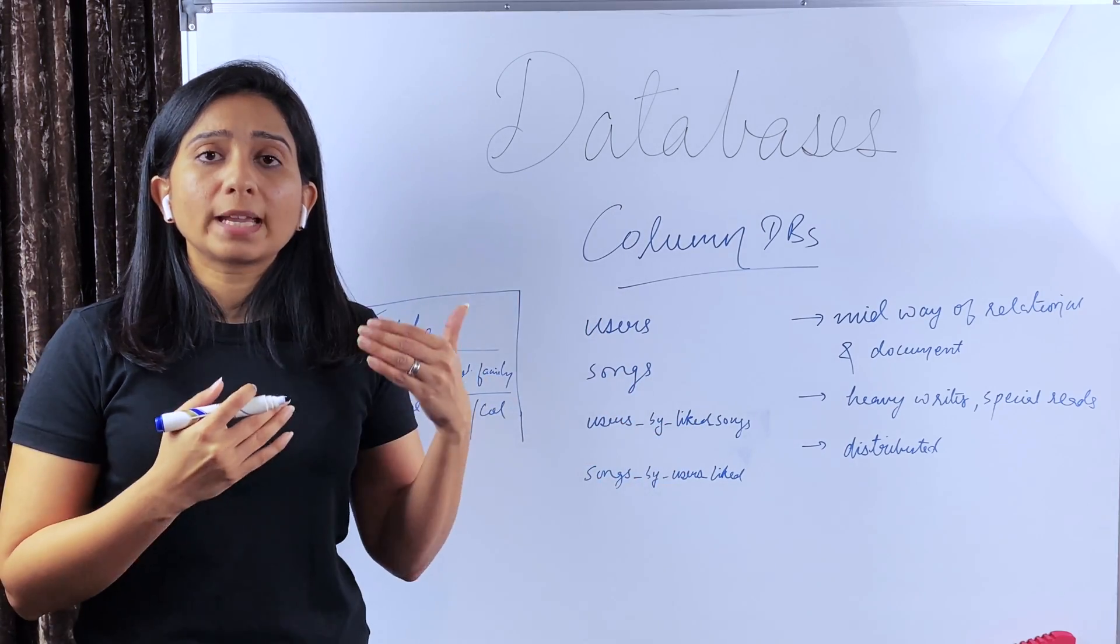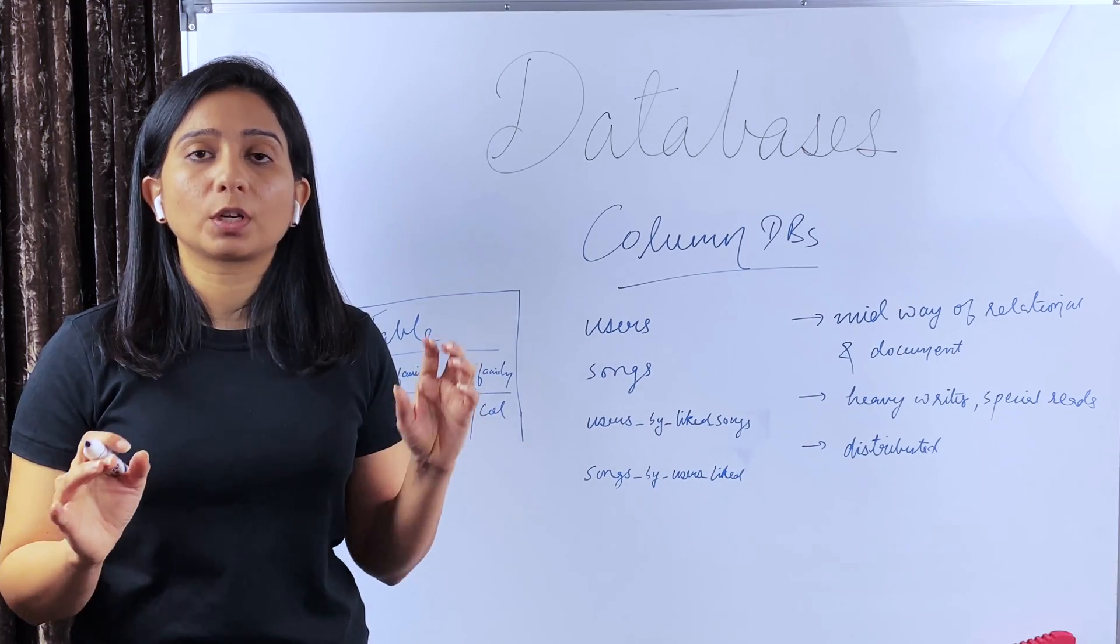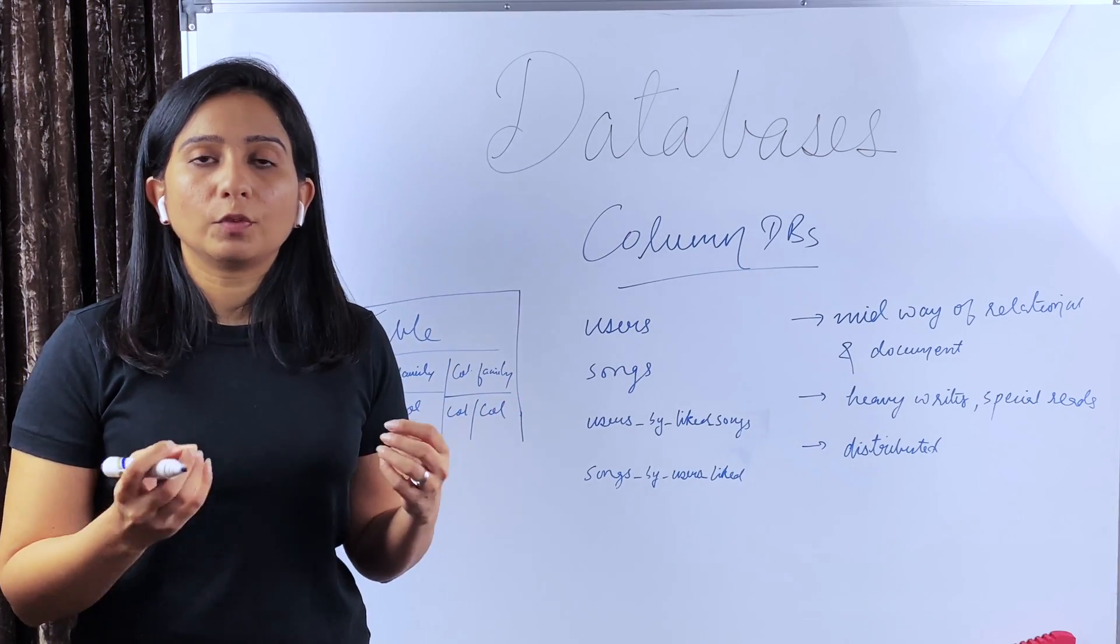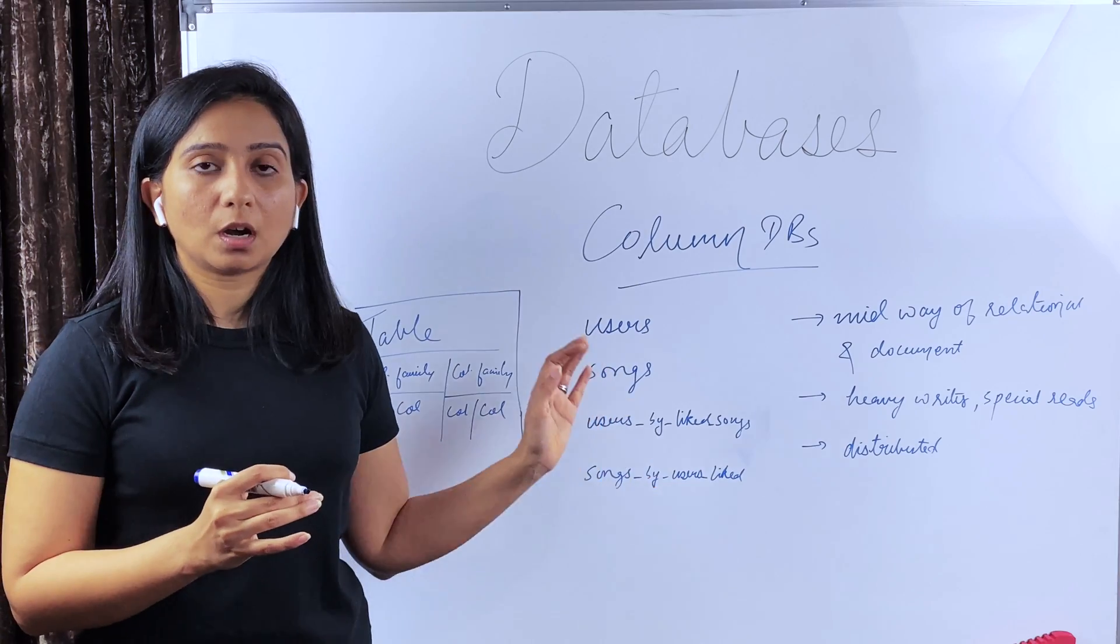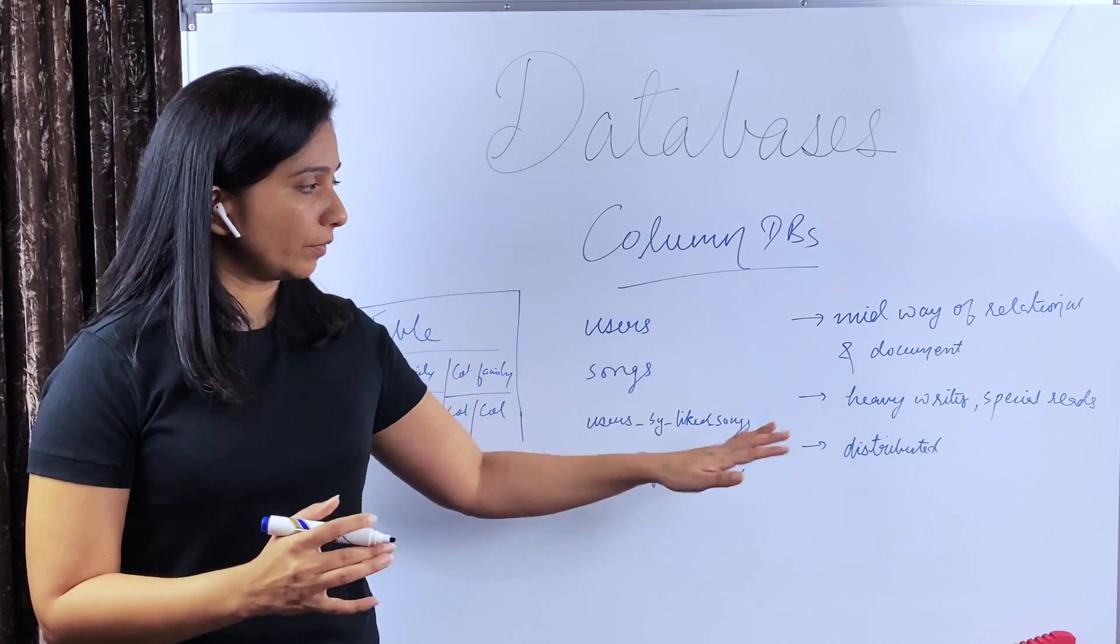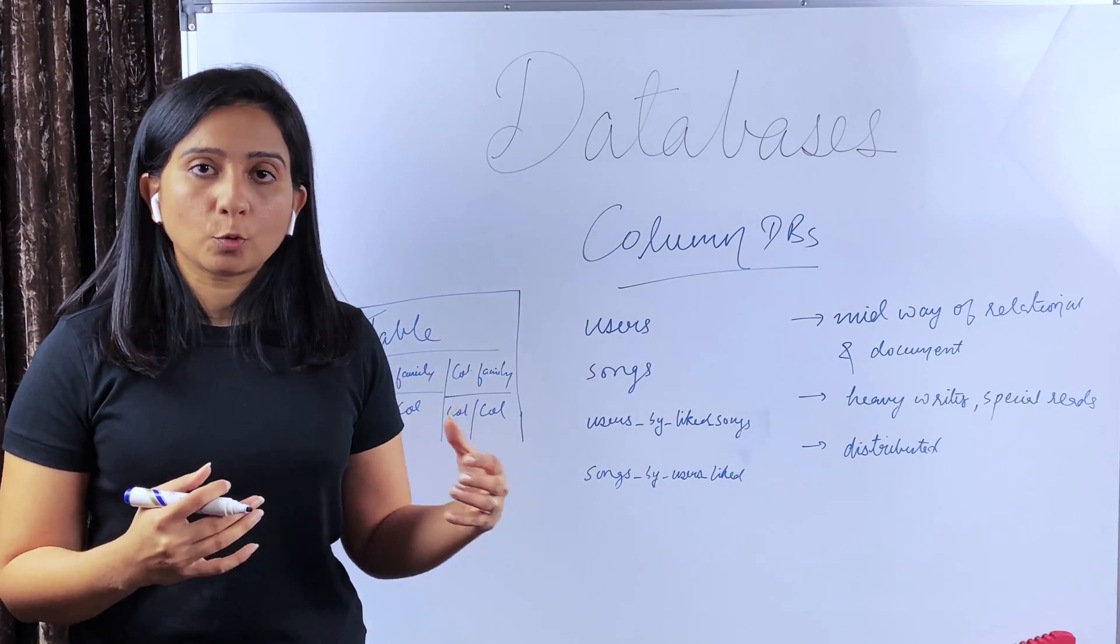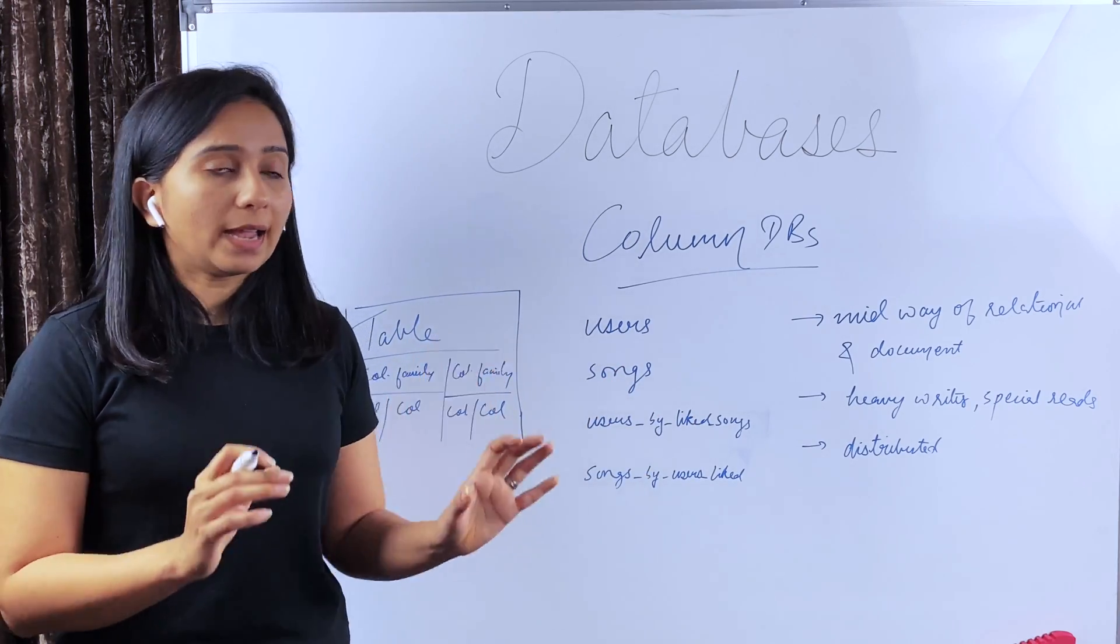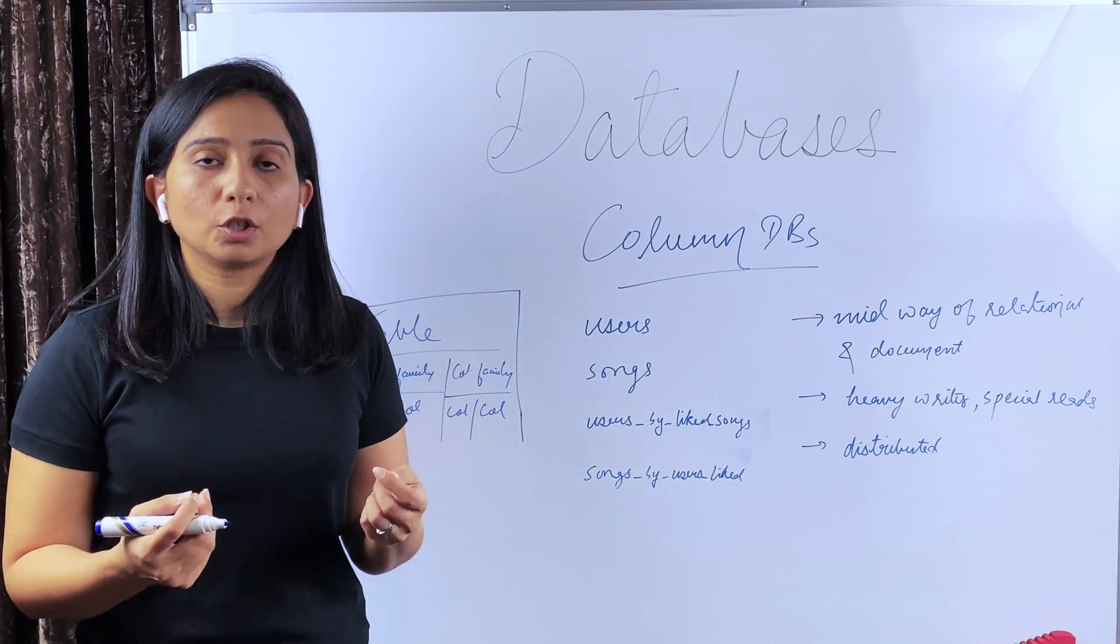Some other examples could be storing health tracking data or storing data for IoT devices where different sensors are deployed and sensors are sending data continuously within every 10 seconds or 30 seconds. In all such use cases, column DBs are used because they support a large number of heavy writes. Coming to the reads, such DBs do not support huge number of reads, but they do support a special kind of reads.